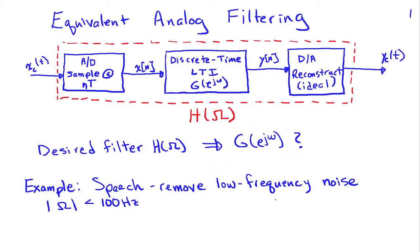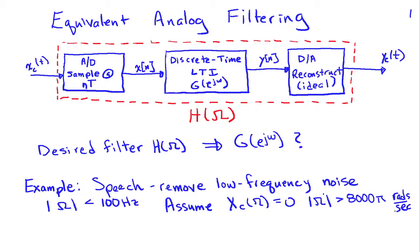For this particular example, we're going to assume that the input speech signal has been band-limited to 4 kilohertz, which corresponds to 8,000π radians per second, and that the sampling frequency ωs is equal to 20,000π radians per second, corresponding to a sampling frequency of 10 kilohertz. So we satisfy the sampling theorem because the bandwidth is 4 kHz and we're sampling at 10 kHz.